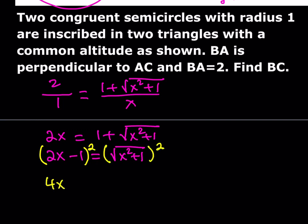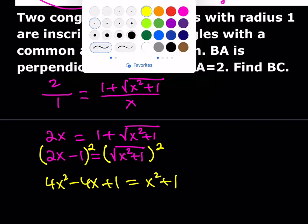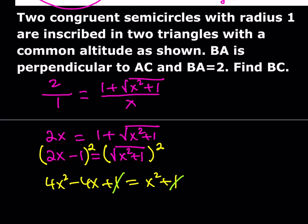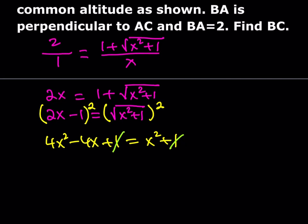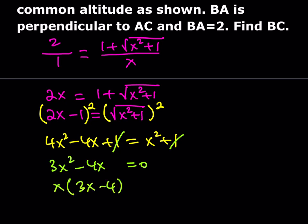Squaring the left-hand side gives 4x squared minus 4x plus 1. The right-hand side is x squared plus 1. The 1s cancel out. Putting x squared on the left-hand side gives 3x squared. Pulling out an x gives 3x minus 4 equals 0.